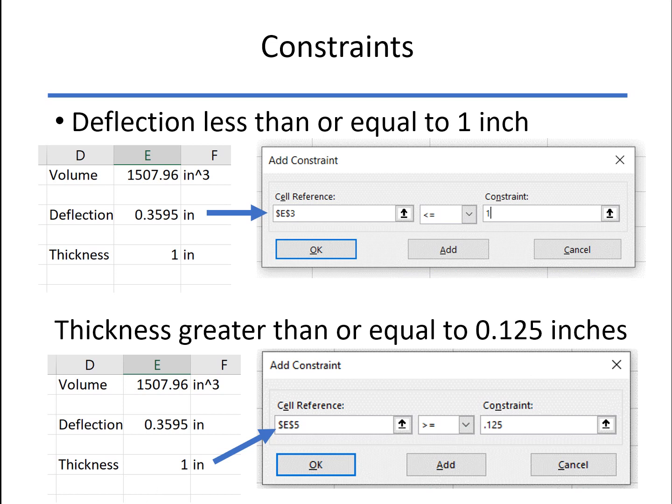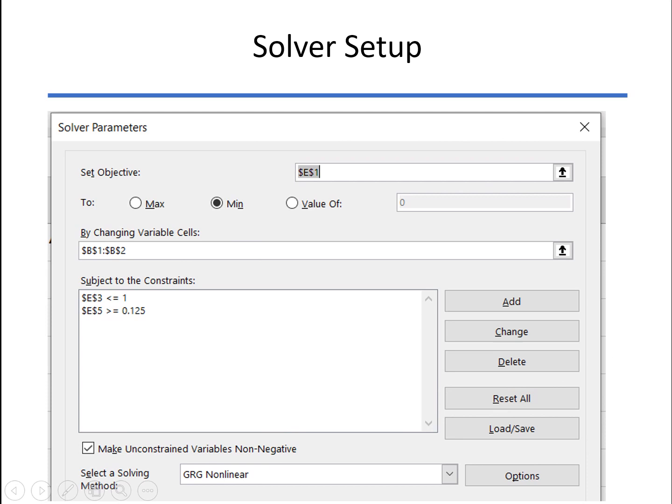We can click Add and add the second one. And this one is that the thickness, which is in this cell E5, is greater than or equal to, again, use the pulldown box to get greater than or equal to, one eighth of an inch, 0.125.